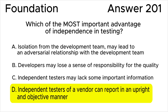All the rest of the answers are wrong. Answer A is incorrect. While independence can sometimes lead to a degree of isolation, fostering an adversarial relationship is not the primary purpose or advantage of independence in testing.